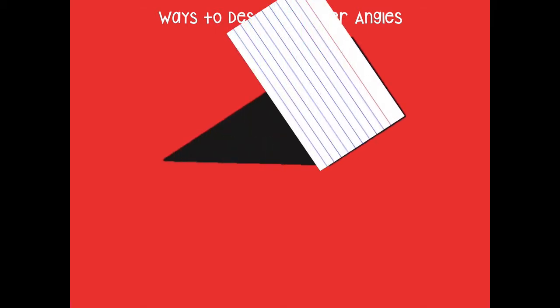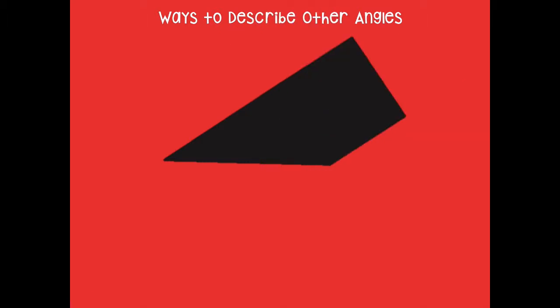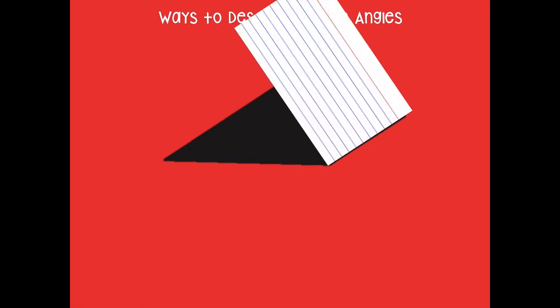Now let's talk about ways we can describe other angles. We've talked about right angles — we use our index card, and if it fits on the corner of the index card, that's a right angle. If I bring in my right angle tool and look right here, this is a right angle because it follows exactly along with the corner of the index card. Now if I put my index card over here, notice how the line comes past my right angle — it goes farther. That is an angle that is greater than a right angle.